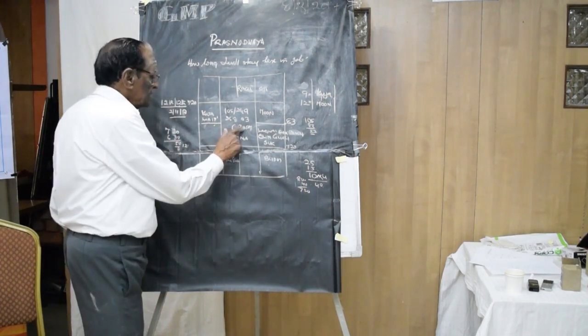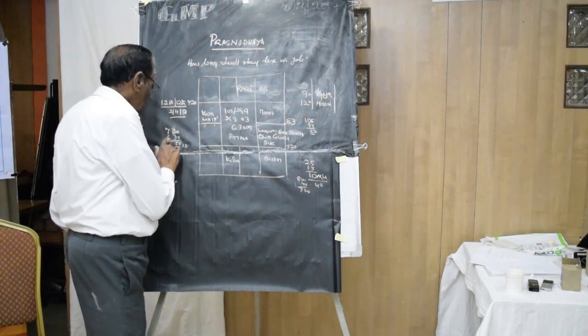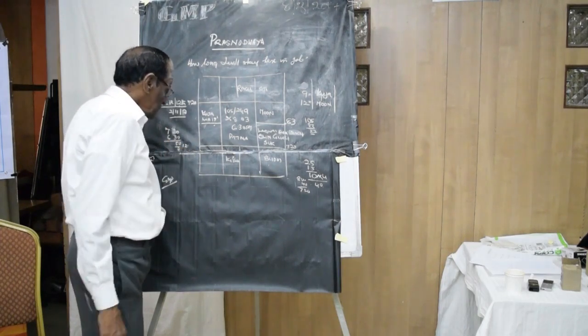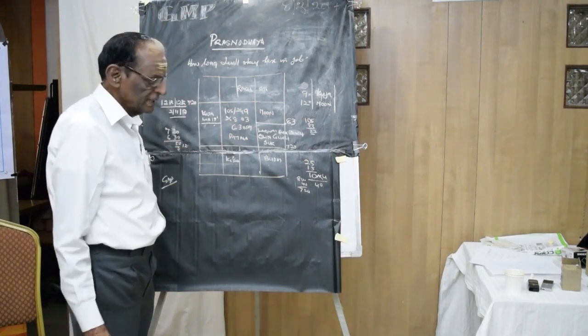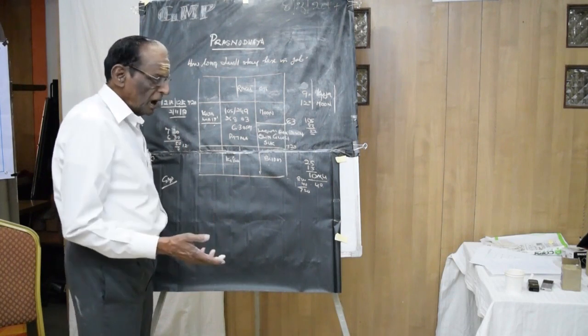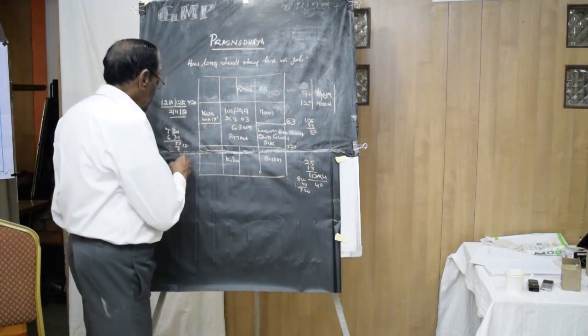Our question started at 6:30 P.M. So 7:20 minus 6:30 is 50 minutes. 50 minutes means 13 degrees. Above half, rounded — 13 degrees.